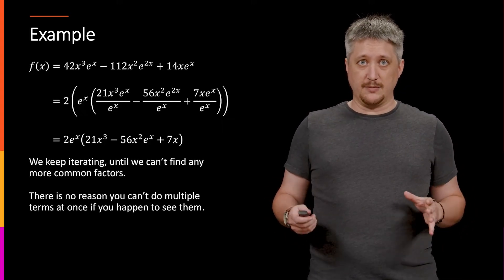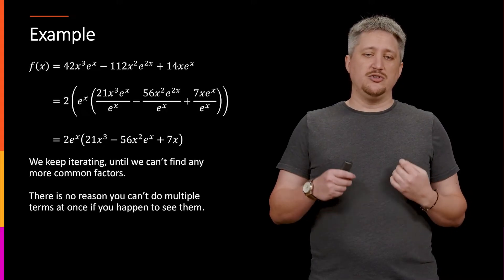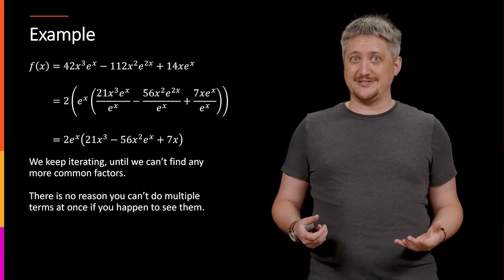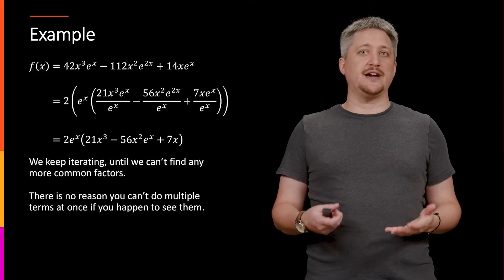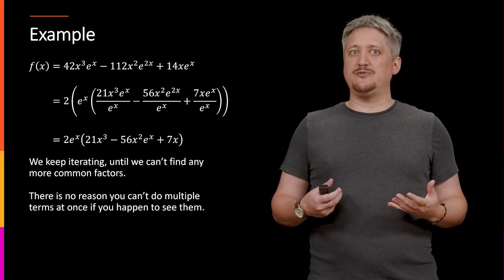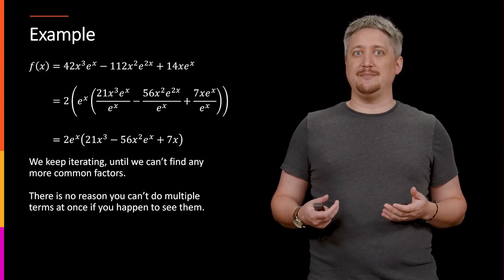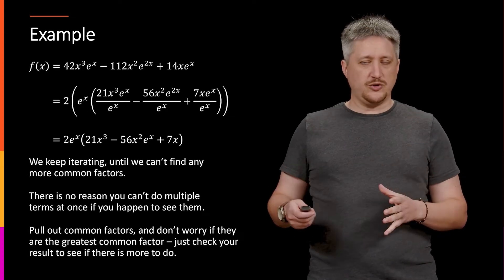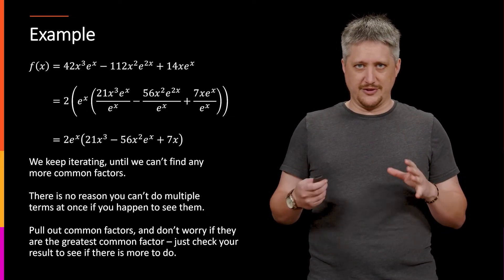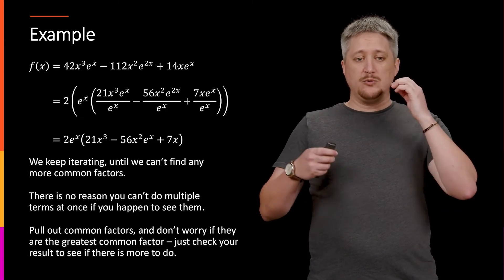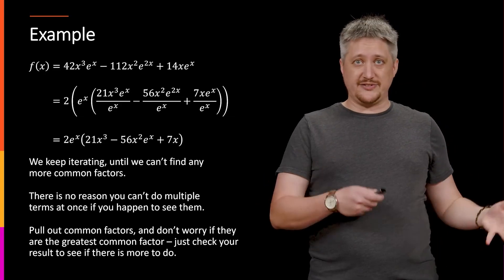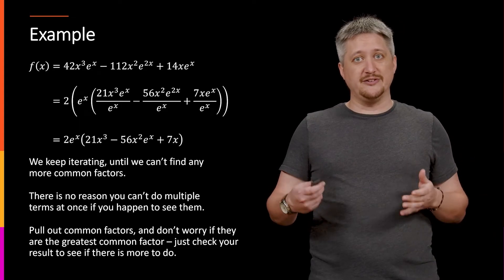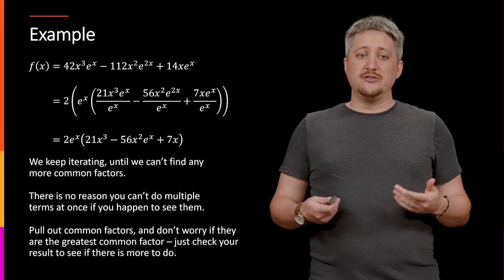That's fine, you can go ahead and pull out more than one at once. Just don't feel obligated to pull out large expressions all at once and hope that you don't make mistakes. Don't feel like you have to do it in one factoring step. Multiple steps is usually a better way to not make mistakes. So we want to pull out common factors, we don't want to worry about if they're the greatest common factor. We just need to check the result and see if there's more to pull out. If there is more to pull out keep doing so, if there isn't then we're done.